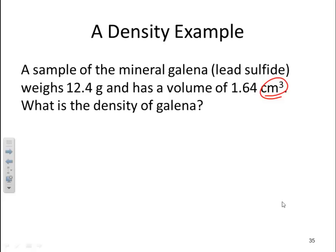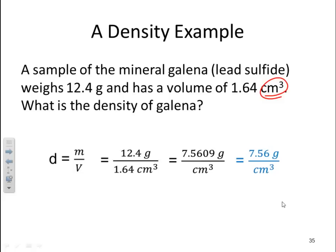We want to know what is the density of galena. Well, we have to build the formula, which is density is equal to mass over volume. So this is just plugging and chugging into the formula. We know that mass is 12.4 grams. The volume is 1.64 centimeters cubed. Multiply that out. We get 7.5609 grams per centimeter cubed. Correct sig figs. It's a division. And both of them have three sig figs. So my final answer should have three sig figs, which is 7.56 grams per centimeter cubed.